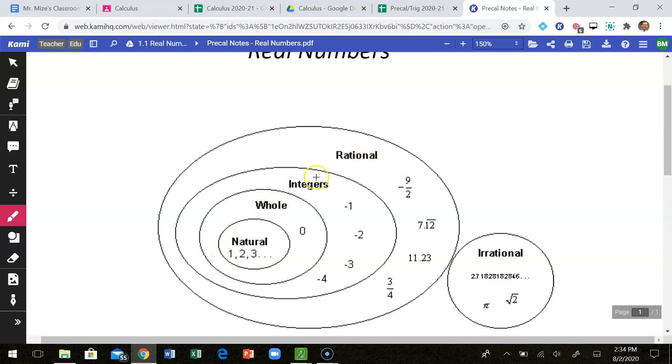The way I like to think of this is all of these numbers are inside of this realm of real numbers. And there's two main categories: there's rational and there is irrational.